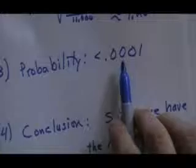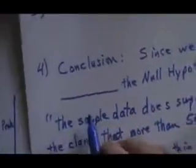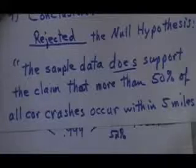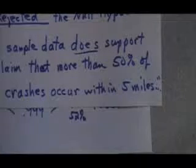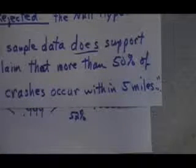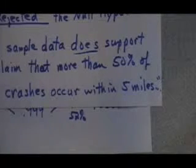Since this probability was less than 1%, we have rejected the null hypothesis that P is equal to 50%. Therefore, we can make the following statement: the sample data does support the claim that more than 50% of all car crashes occur within five miles of home. And that completes our example, a first example of testing a hypothesis, testing a claim.